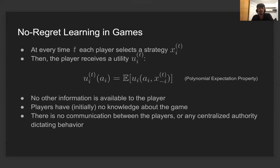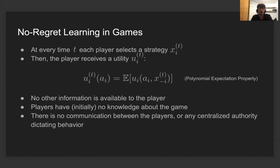In this setting, the problem of no-regret learning in games is defined as follows. At every iteration t, every player has to select a strategy — that is, a probability distribution over the set of actions. Then the player receives some feedback from the environment. In the full information model we consider for this talk, the player receives a utility vector, where we fix the strategy of every other player besides player i in the previous round, and every coordinate is the expected utility the player would have obtained by playing the corresponding action.